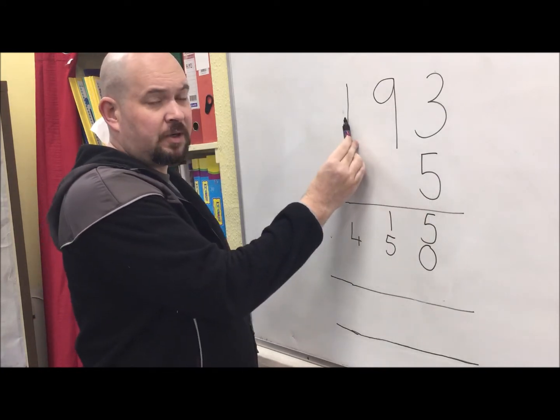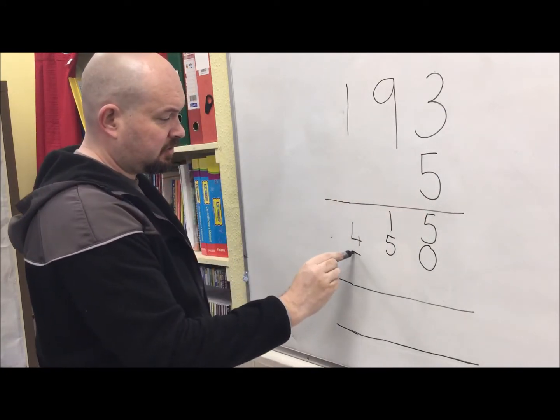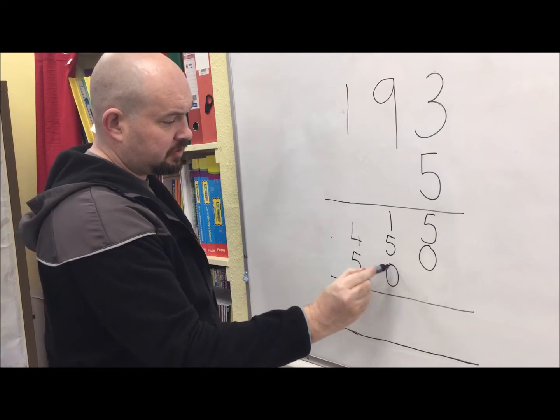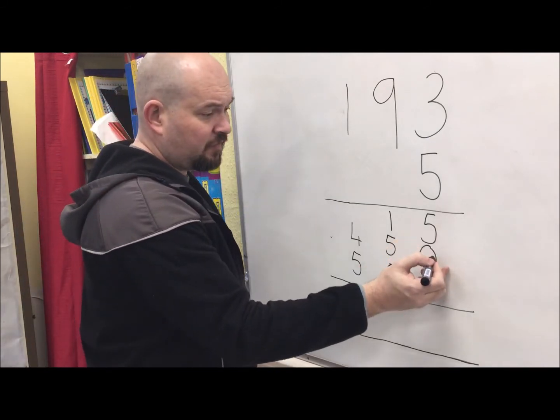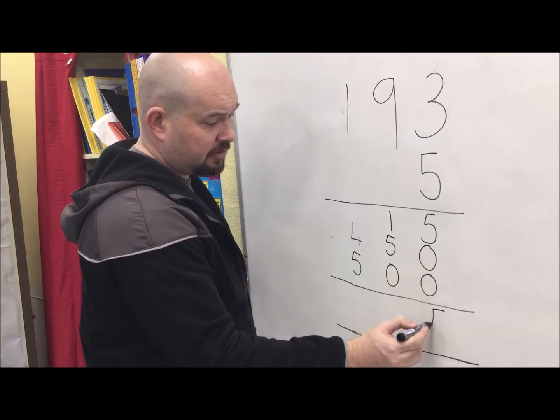And lastly, 5 lots of 100 or 500. Hundreds, tens and ones. Same again. Add them all up at the end. 5 and nothing and nothing makes 5.